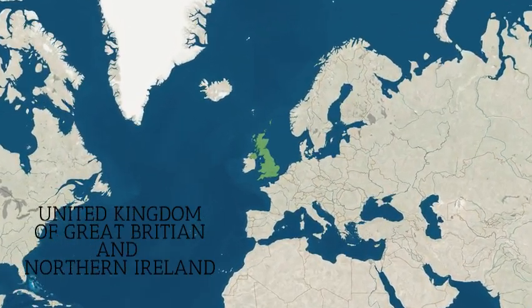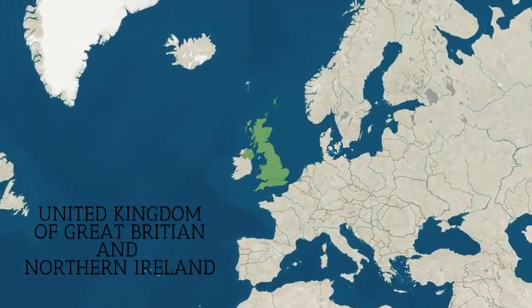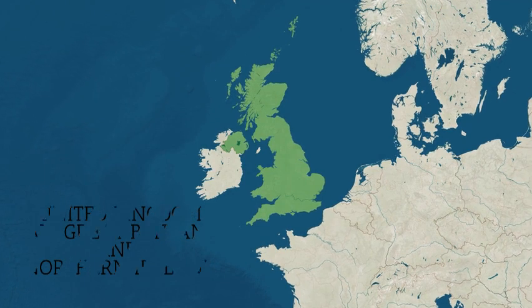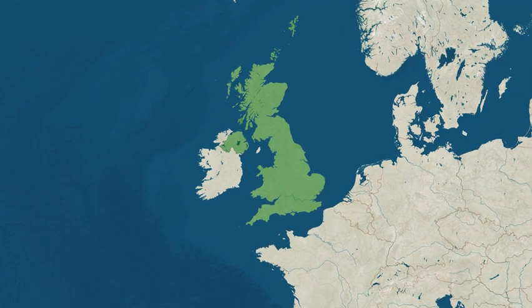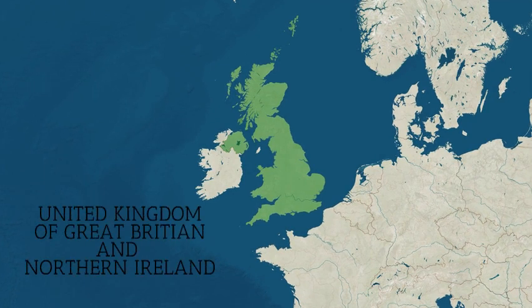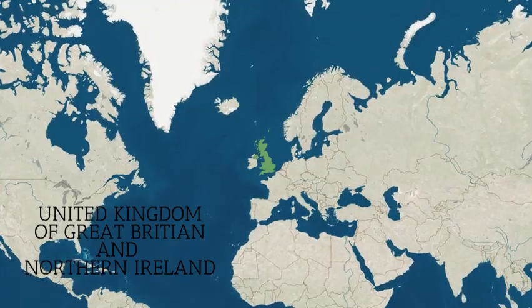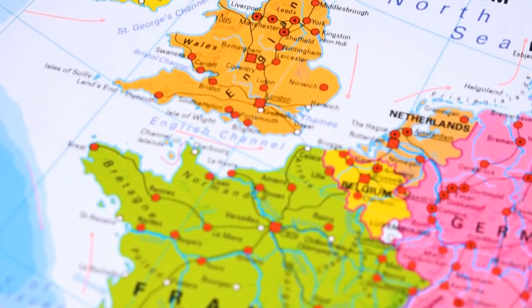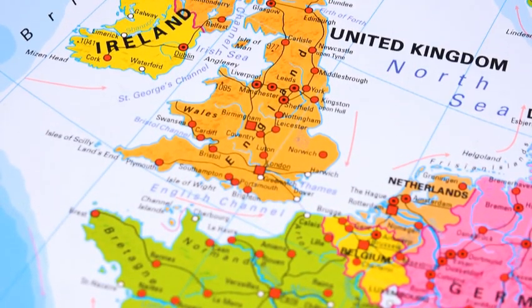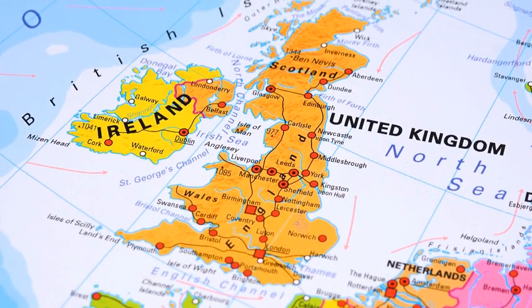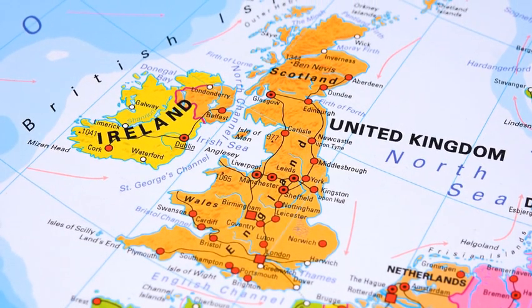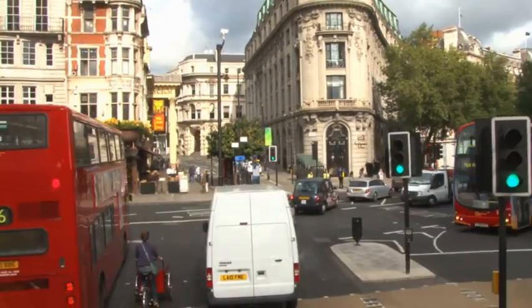Britain is located on the continent of Europe. It is also known as the UK, or the United Kingdom of Great Britain and Northern Ireland. Just like the Bahamas, it is an archipelago of islands, and London is its capital.